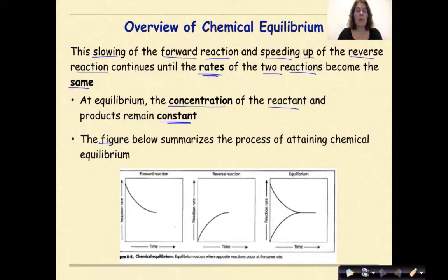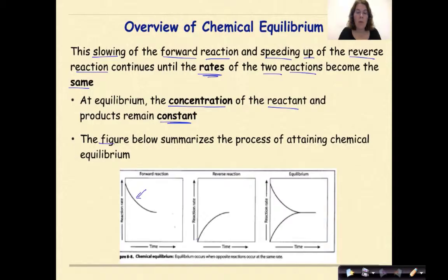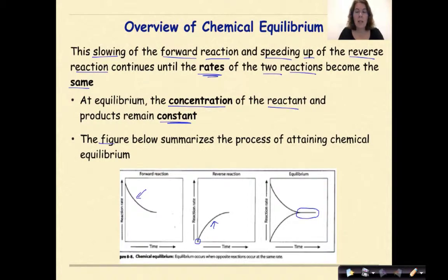This slowing of the forward reaction and speeding up of the reverse reaction continues until the rates of the two reactions become the same. At equilibrium, the concentration of the reactants and products remains constant. The figure below summarizes the process of attaining chemical equilibrium. In the beginning we have only reactants, and the amount of reactants over time will decrease. At the same time, at the beginning we have no products, but as those reactants come together to make products, the amount of products over time will increase. At equilibrium, the rate of the forward and reverse reactions will become constant and we will see this as a flat line in our graph.